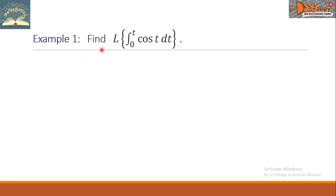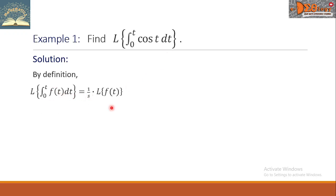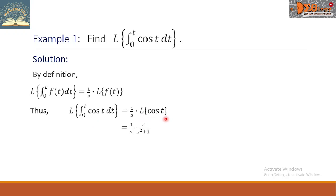Example 1: Find the Laplace transform of the definite integral from 0 to t of cosine t dt. Using our working formula, this is equal to 1 over s times the Laplace transform of cosine t. The Laplace transform of cosine t simplifies to s over s squared plus 1. We can cancel the s in the numerator with the s in the denominator, and the final answer is 1 over s squared plus 1.